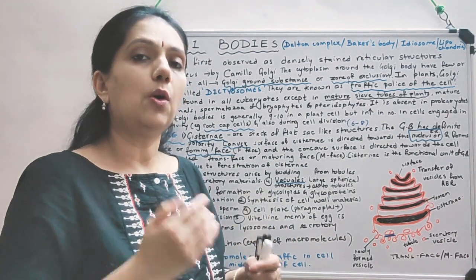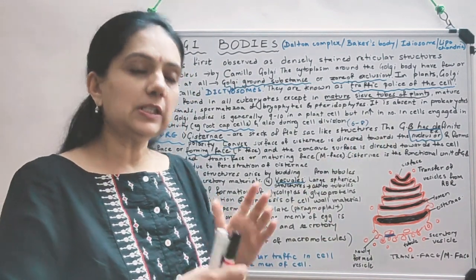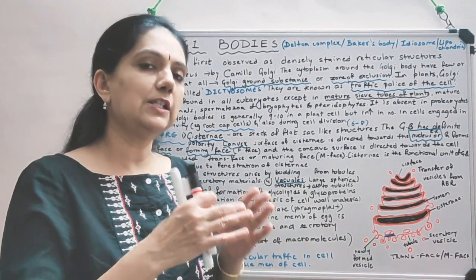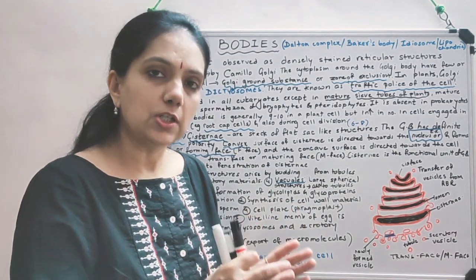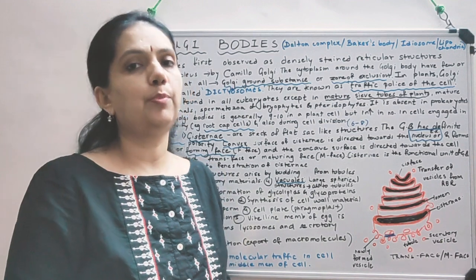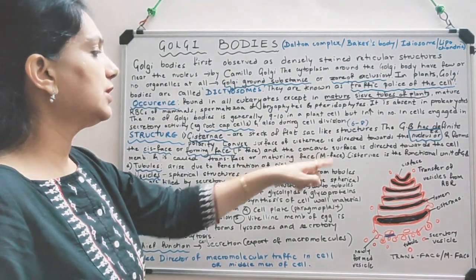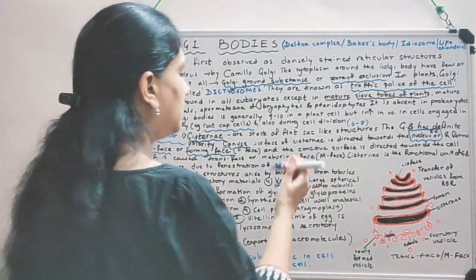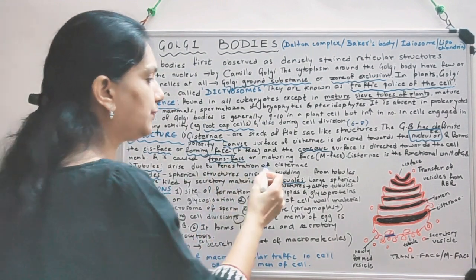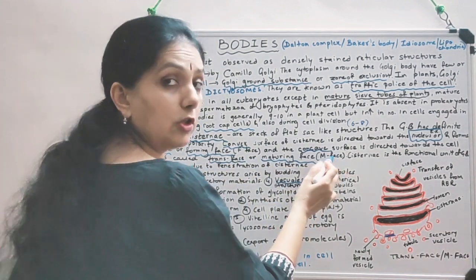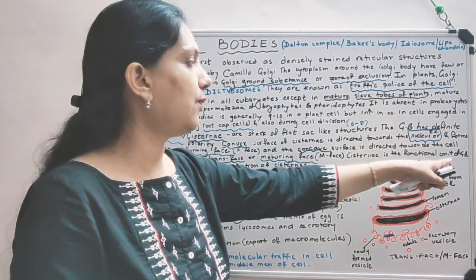The concave surface is always directed towards the plasma membrane or the cell membrane. This positioning of Golgi body - convex surface directed one way and concave surface directed another - is called polarity. The concave surface facing the plasma membrane is known as the trans phase, or maturing phase, also called M phase. The cisternae are the functional unit of Golgi body.